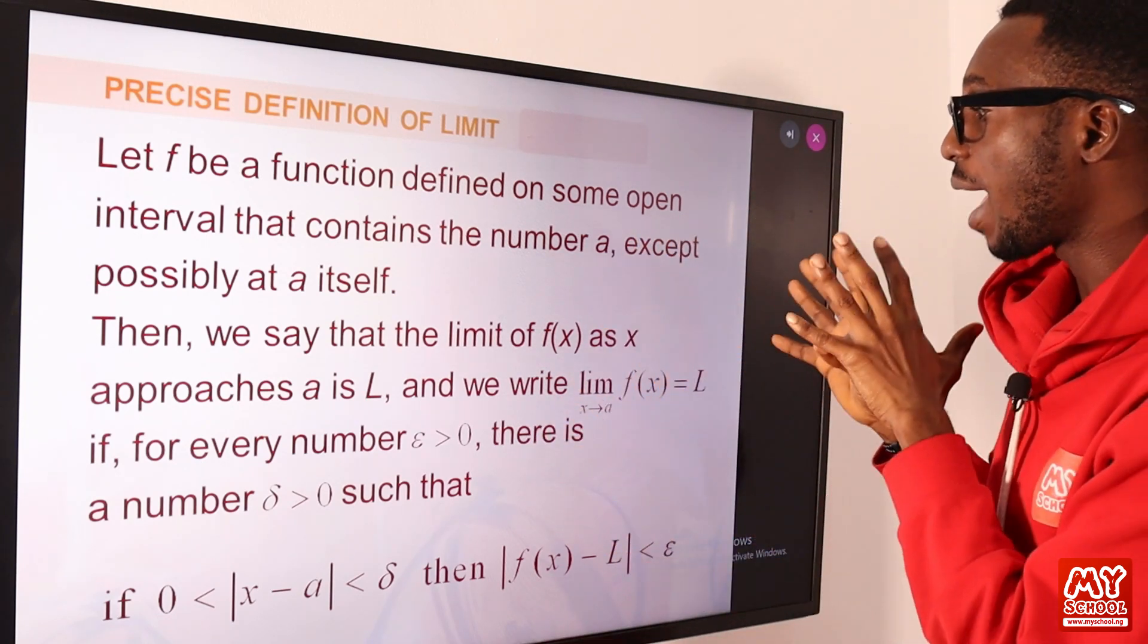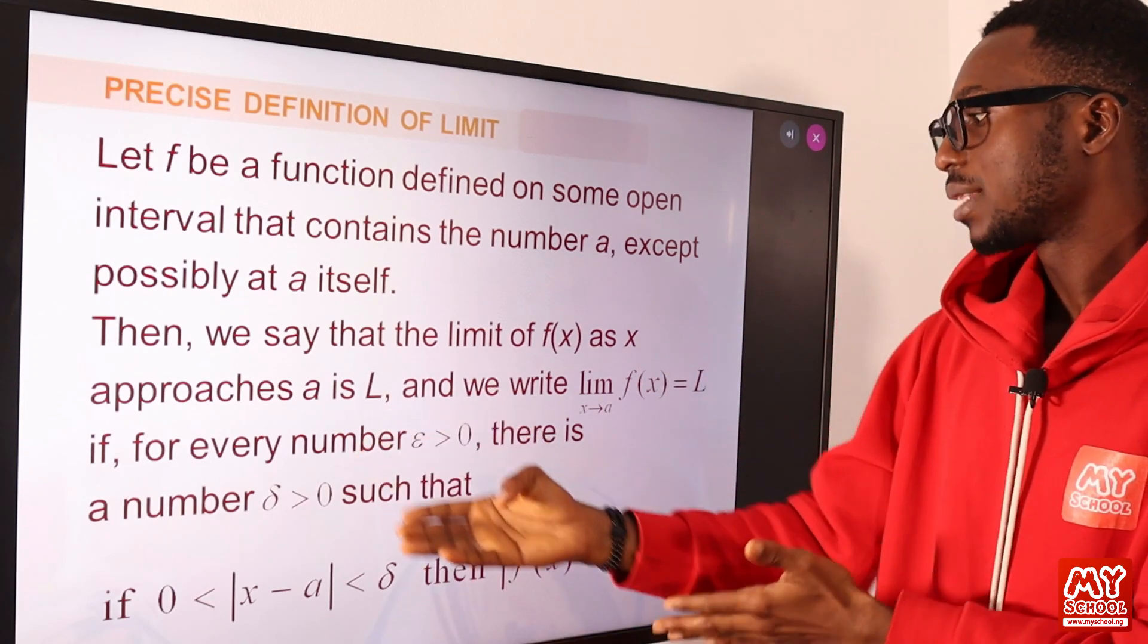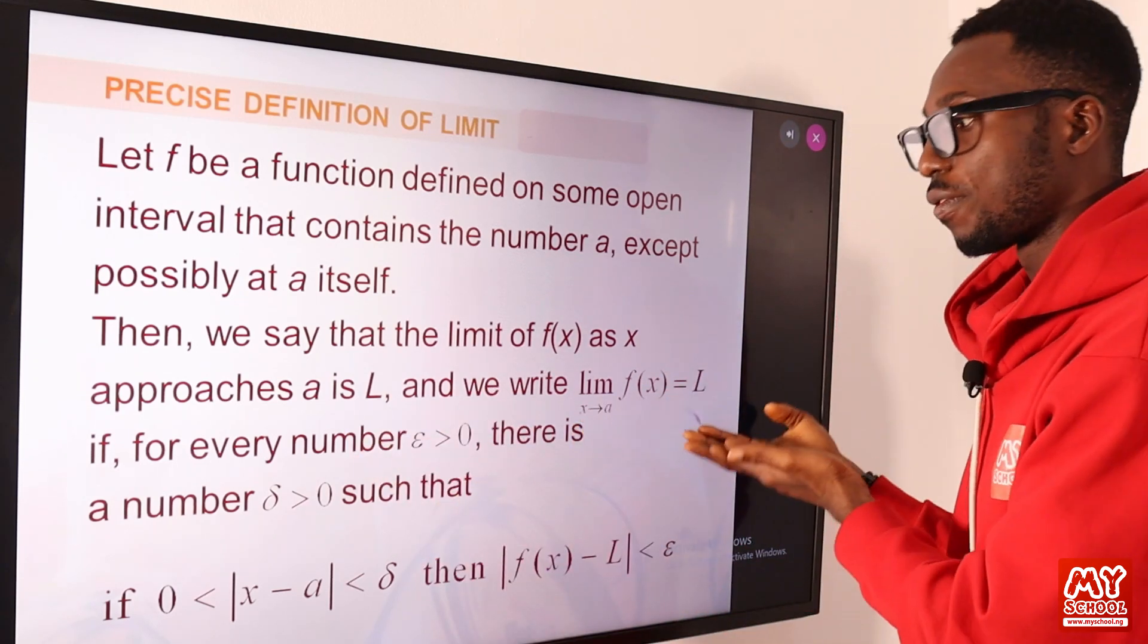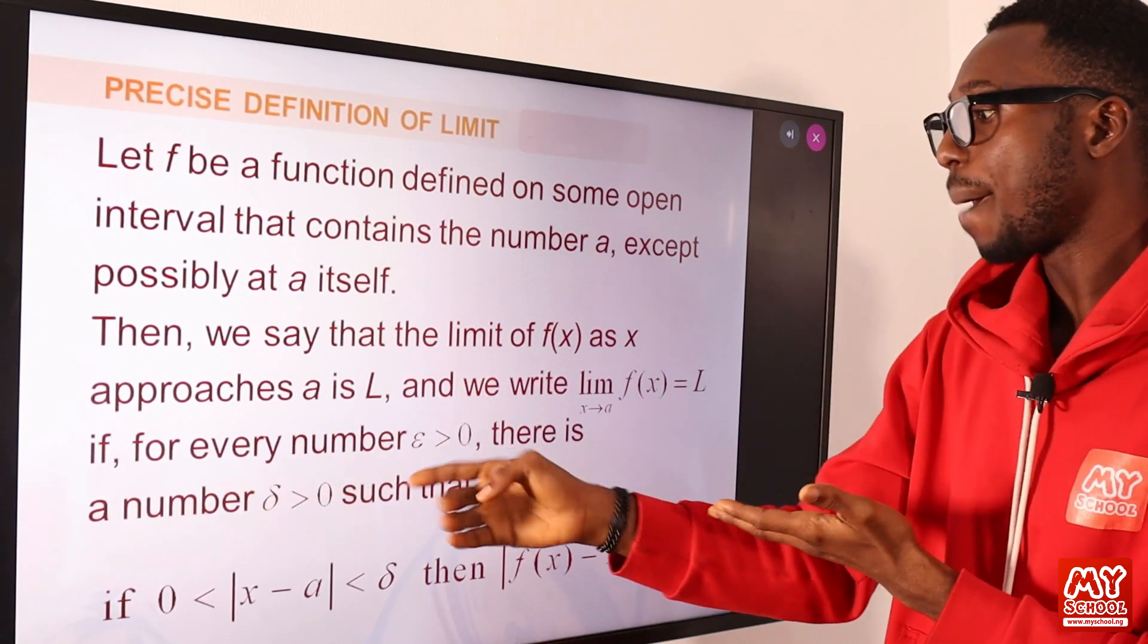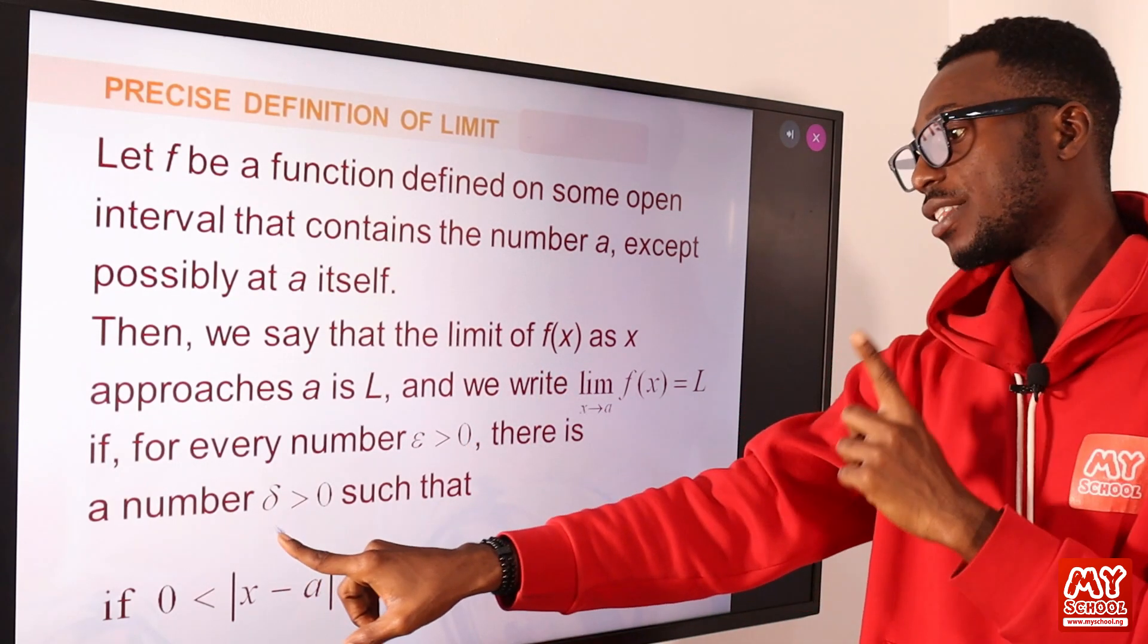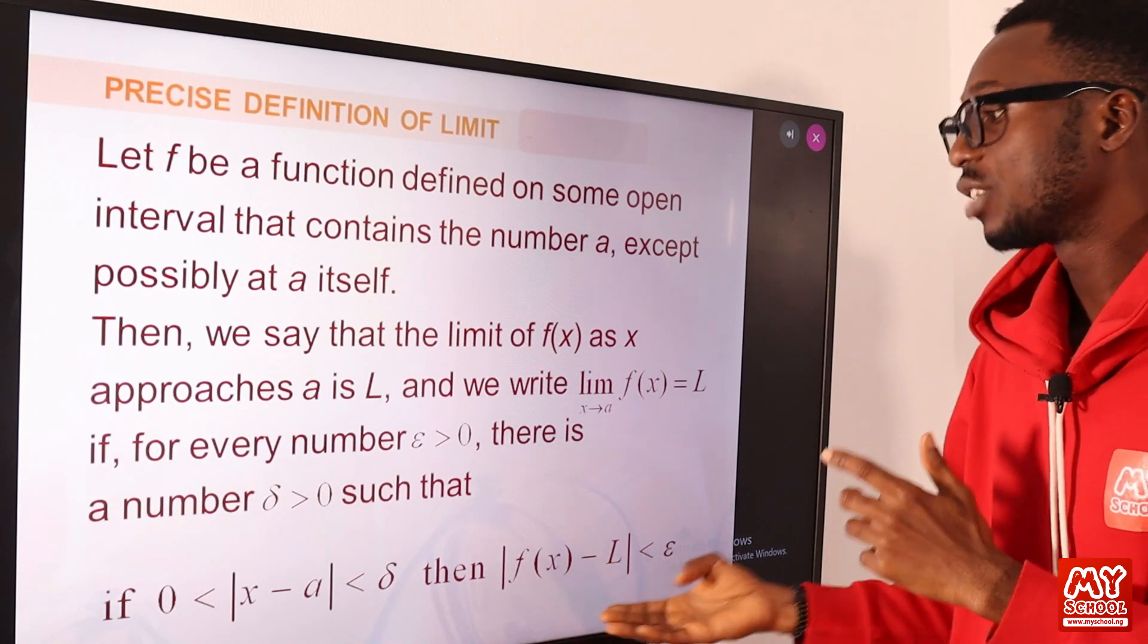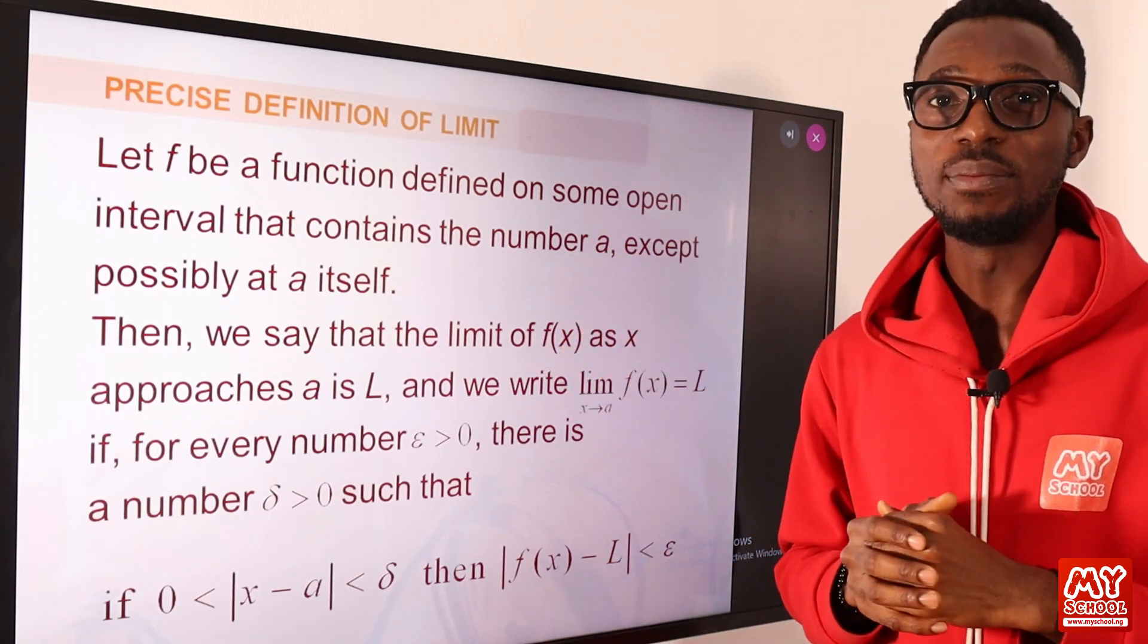We say that the limit of f(x) as x approaches a is L. This is the notation for it. For every number epsilon greater than zero, there is a number delta such that you have this relationship.